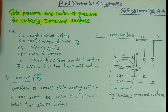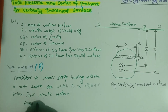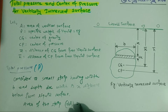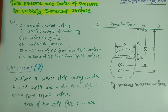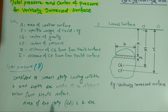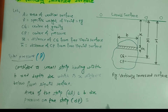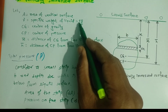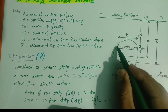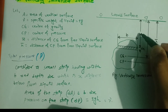We can calculate the area of the small strip: dA = b·dx, the product of width and depth. The pressure created by the liquid on the strip is equal to ρgh = γx, where γ is the specific weight and x is the distance of the strip below the liquid surface.